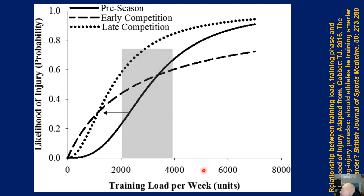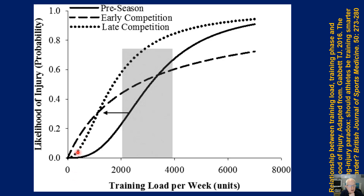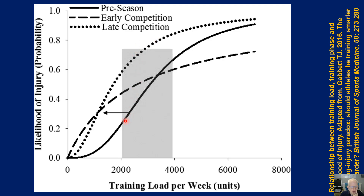This schematic, published in 2016 from Tim Gabbett's group in Australia, plots training load per week (an arbitrary unit combining intensity, frequency, and duration) against the likelihood of injury on a probability scale. They plotted this against three conditions: pre-season, early competition, and late competition. Taking the same training load block of 2,000 to 4,000 units, in late competition it is far less well tolerated — the probability of getting an injury in late competition is far greater than in either pre-season or the early competition phase.